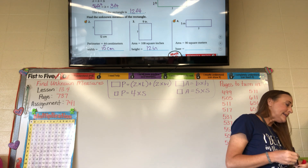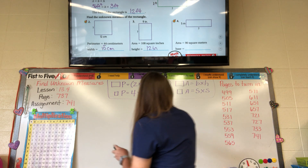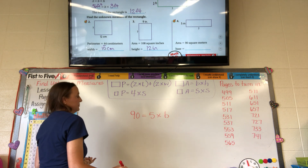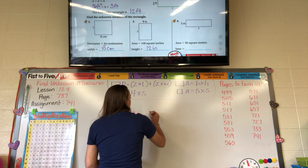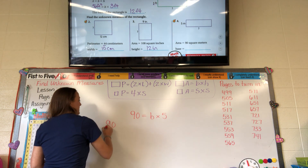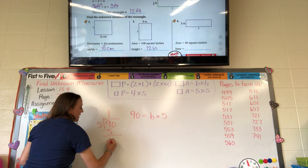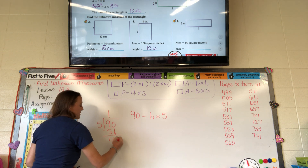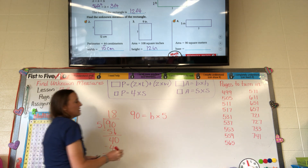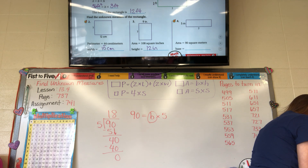Area is 90 square meters with a height of 5, and we don't know the base. So 90 equals base times 5. We divide 90 by 5. 5 goes into 9 one time, 1 times 5 is 5, 9 minus 5 is 4, bring down the 0. 5 goes into 40 eight times. 8 times 5 is 40, 40 minus 40 is 0. So our base is 18 meters.